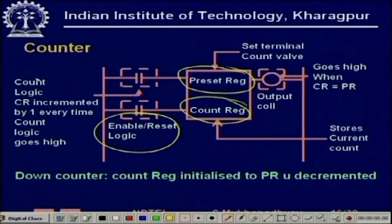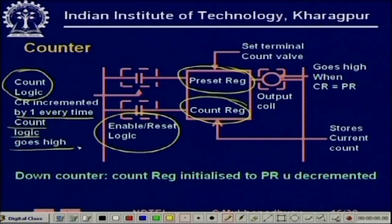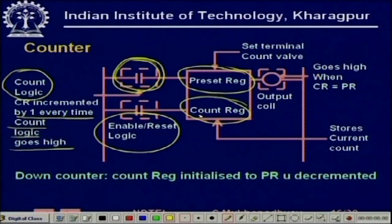Again you have enable and reset logic, same as the timer. In this case we have what is known as count logic rather than timer run logic. The count register is incremented by one every time the count logic goes high. When the count register value exceeds the preset register value, the terminal count is reached and the output coil goes high.